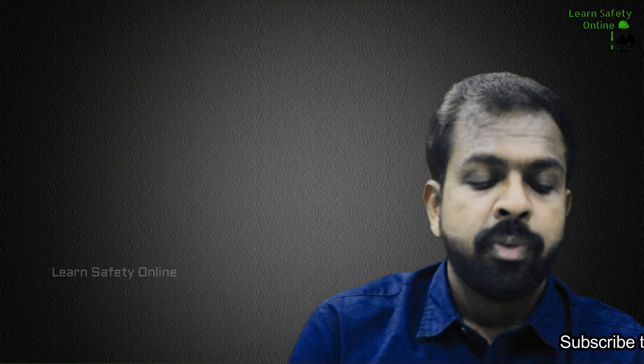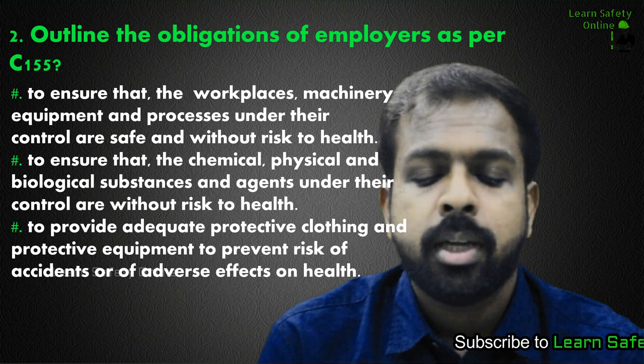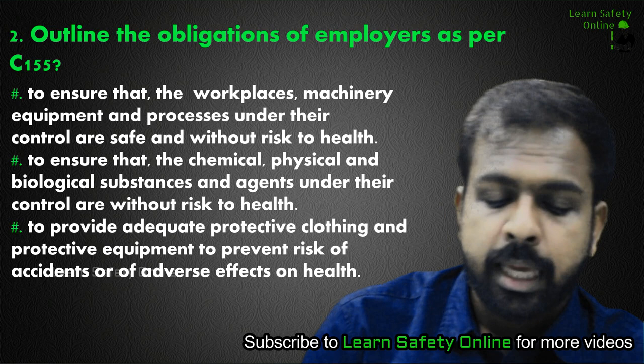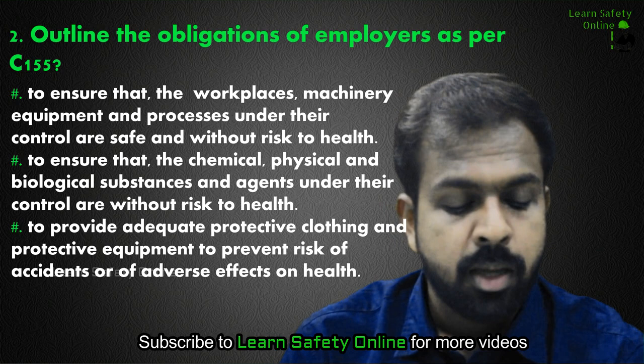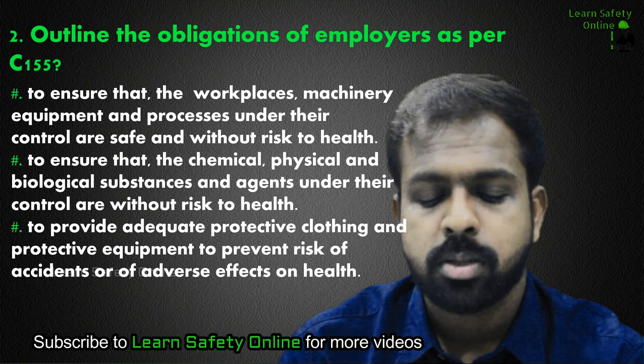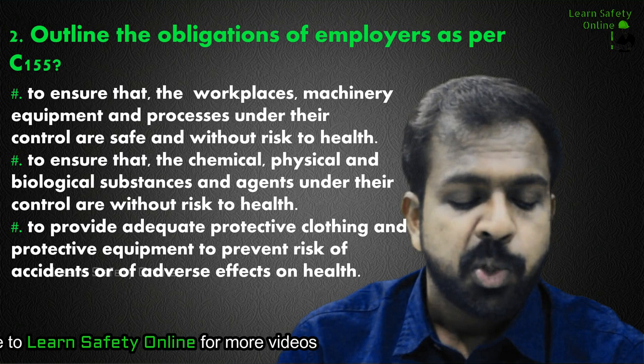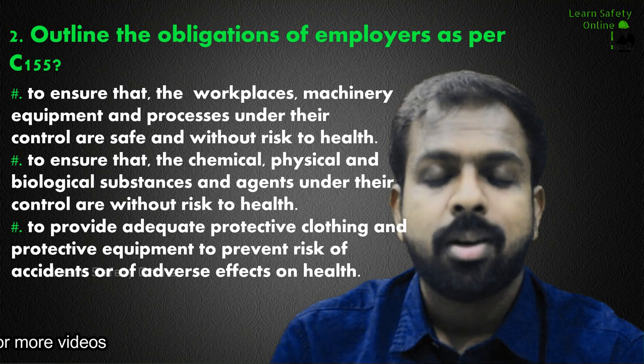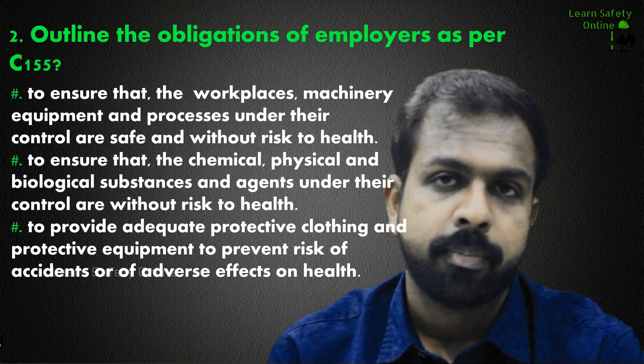Moving on to the next question: the obligations of employers as per Convention C155. The obligations of the employer are to ensure that workplace machinery, equipment and processes under their control are safe and without risk to health; to ensure that chemical, physical, and biological substances and agents under their control are without risk to health; and to provide adequate protective clothing and equipment to prevent risk of accident or adverse effects on health.